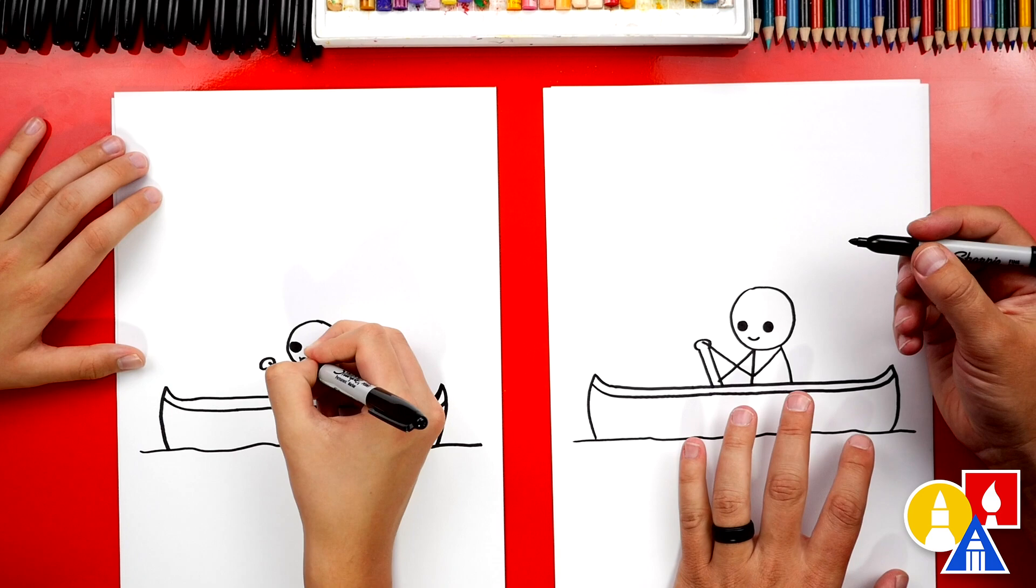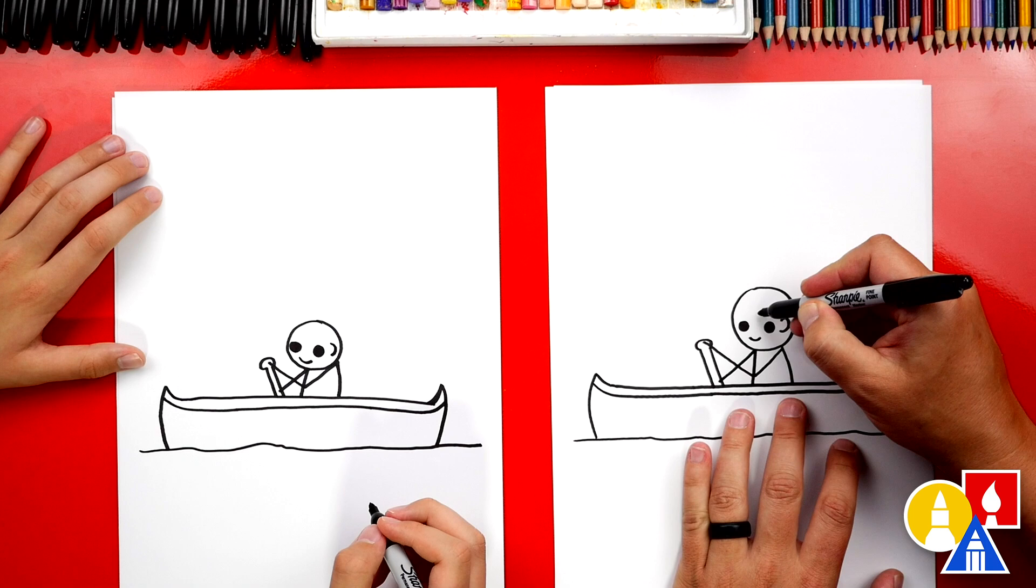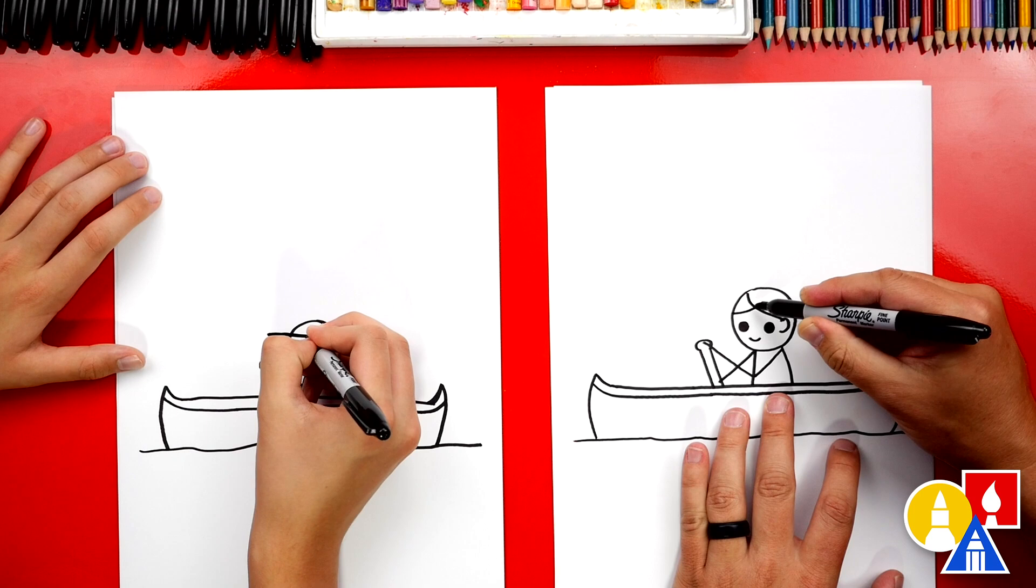I'm also gonna draw an ear. We can draw a backwards C. If you want you could add different details to your person. If you want you could draw a baseball hat. I'm gonna draw long hair so mine's gonna be a girl and so I drew an S curve that goes over to the ear and then another line coming across.